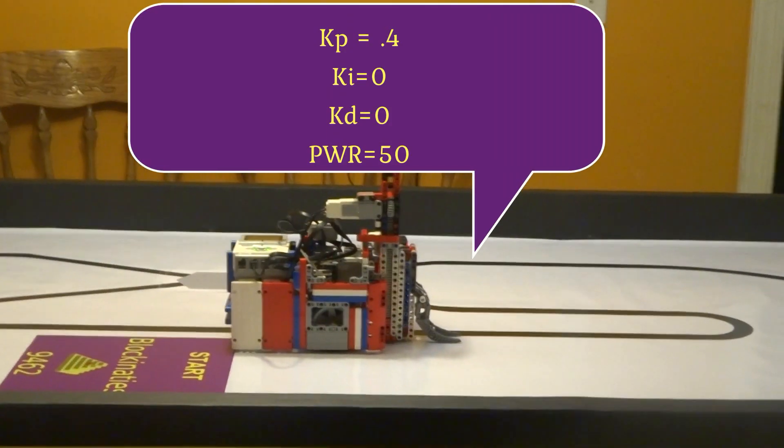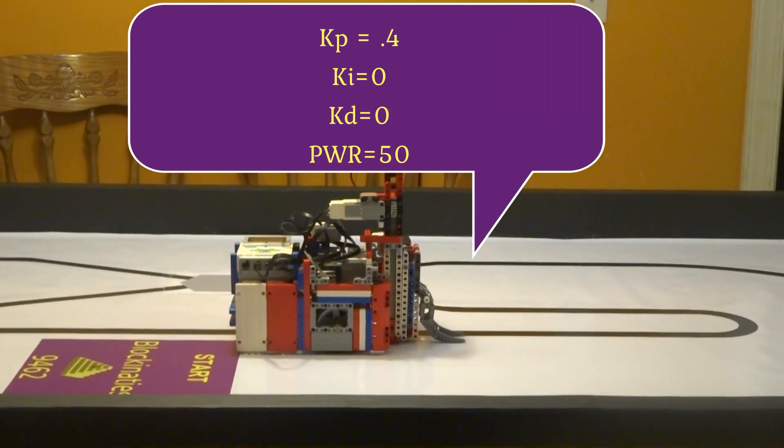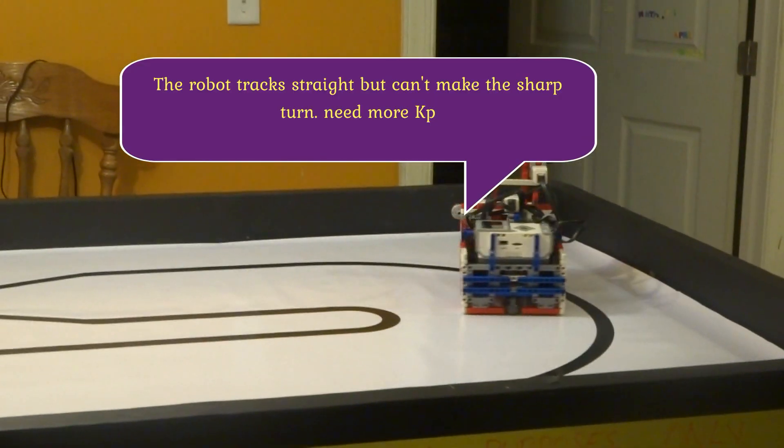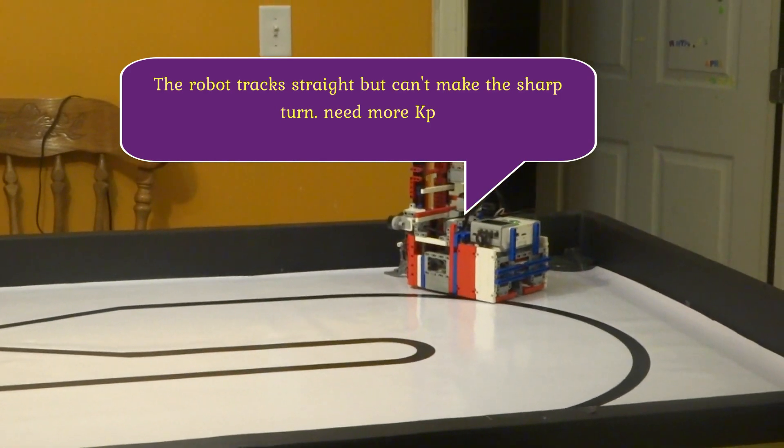To start tuning our line follower, we'll start with a little KP at 50% power. The robot drives straight but he can't quite make the sharp turn. We need more KP.